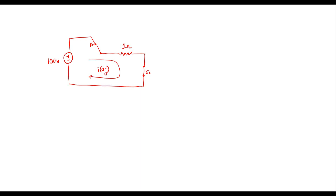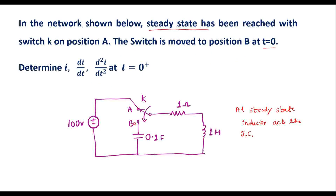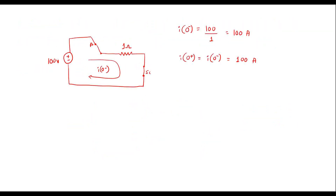Let me assume the current in the circuit is I of 0 minus, that is, before the switching operation. I can find I of 0 minus is equal to V by R, that is 100 divided by 1, which is equal to 100 amps. Immediately after the switching operation, I of 0 plus is the same as I of 0 minus, which is 100 amps. Also, before switching, voltage across capacitor is 0, so Vc of 0 minus is equal to 0, which is the same as Vc of 0 plus.